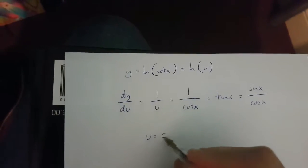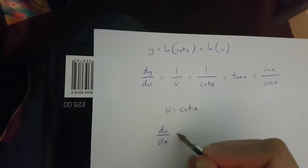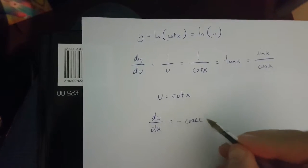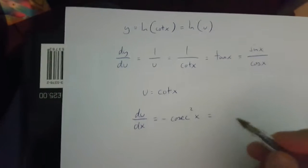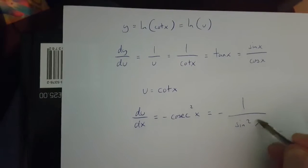Now if u is equal to cotx, then du over dx is going to be equal to minus cosecx squared. But this is equal to minus 1 over sinx squared.